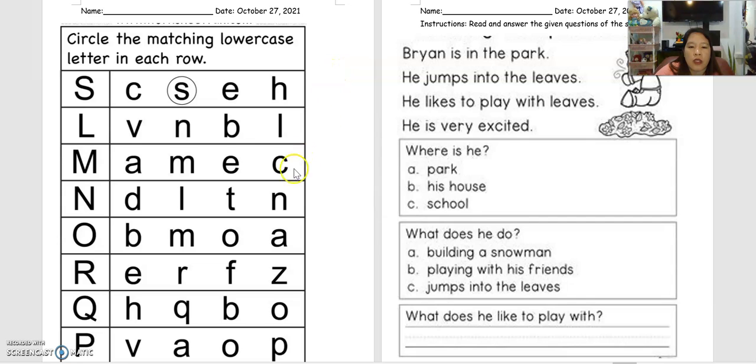Okay, so for today's activity we have to circle the lowercase letter. As you can see here, we start with the letter S to P. These letters are in order, so we have S, L, M, N, O, R, Q, and P.